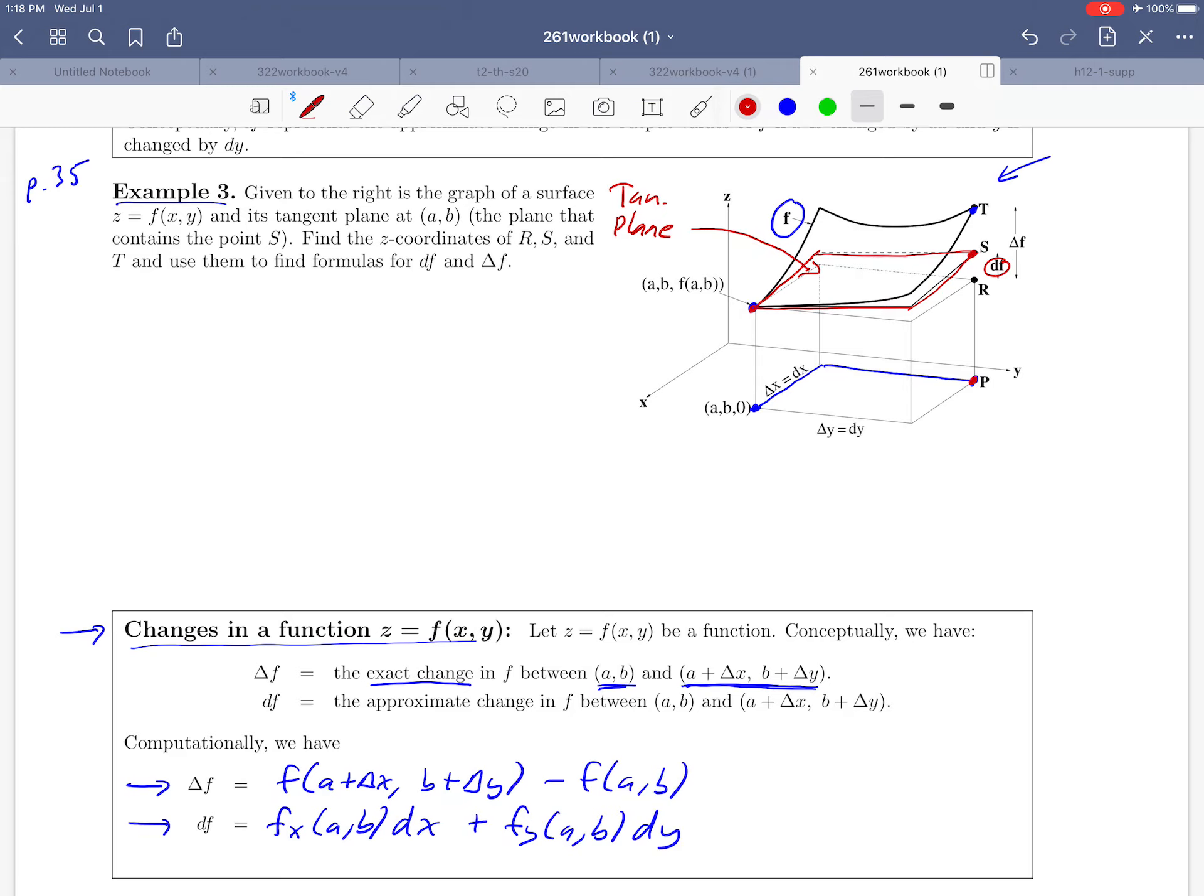You can see that delta f and df are not the same but here's the thing. If these two changes delta x and delta y, these two distances that you move, are small, delta f and df are going to be reasonably close to each other. That's why we call this an approximation.